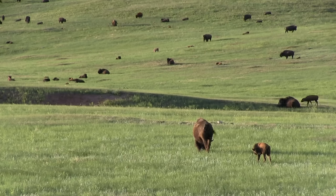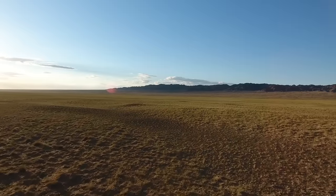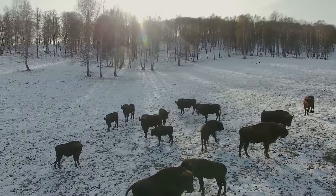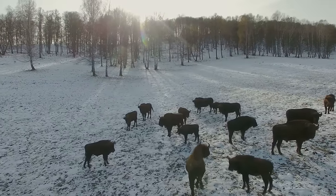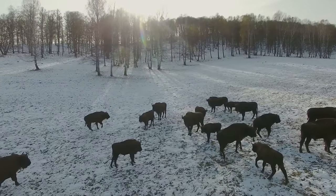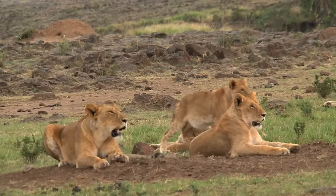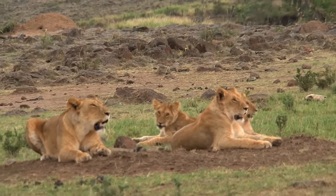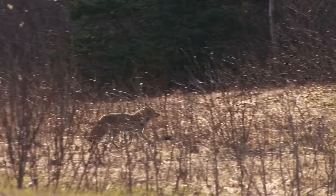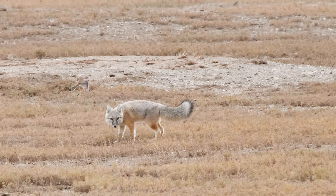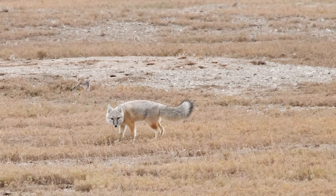Known as steppe in Asia, prairie in North America, pampas in South America, and veld in Southern Africa, temperate grasslands sit at roughly the same latitude as the temperate forest biome. The nights and winters in temperate grasslands are frigid, and thanks to the lack of coverage, many of the animals here have thick fur to stave off the cold. Although there is some crossover of fauna from the tropical grasslands in Africa, the largest predators that occupy the rest of the temperate grassland biome are coyotes, foxes, and smaller felines such as the pampas cat.